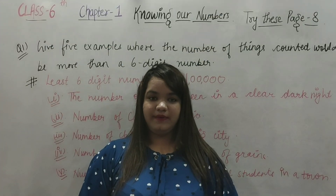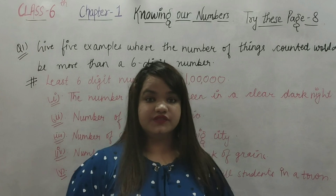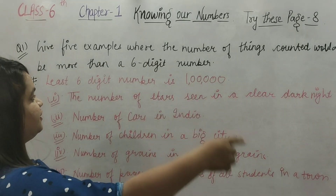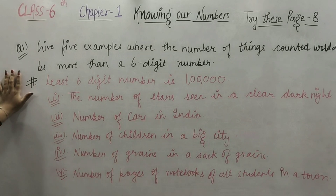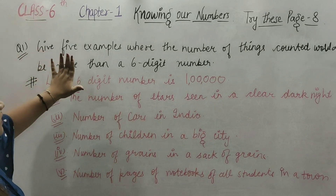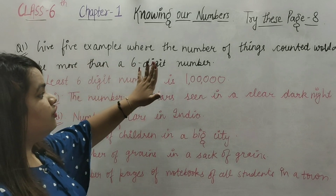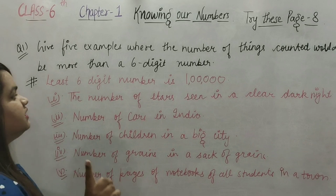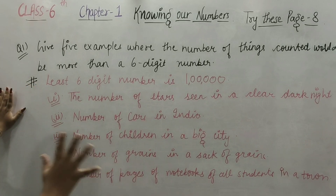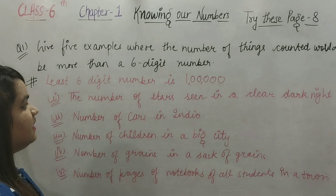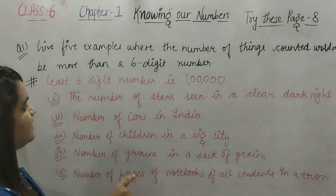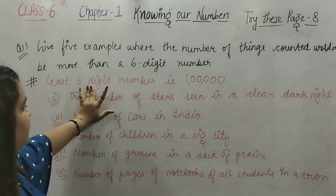Hey guys, welcome to my channel EduoMaths. In this video we are in Class 6, Chapter 1 'Knowing Our Numbers' — Try These, page number 8, Question 1. It says: give 5 examples where the number of things counted would be more than a 6-digit number. The least 6-digit number is 1 lakh, so the examples must exceed that.